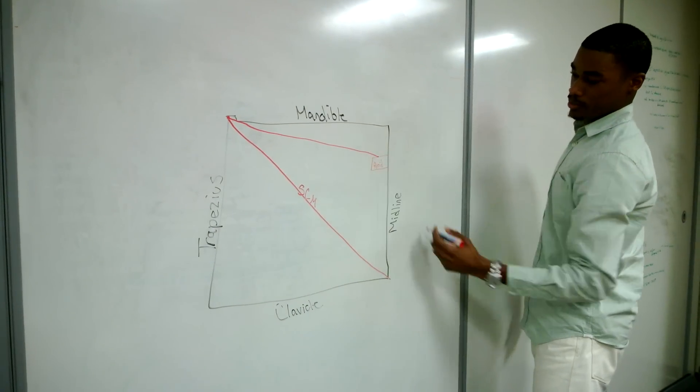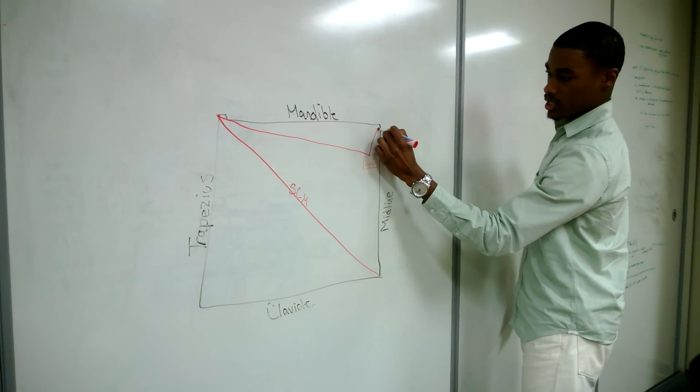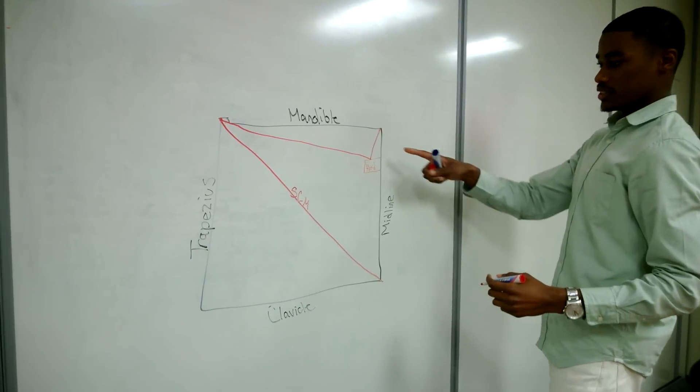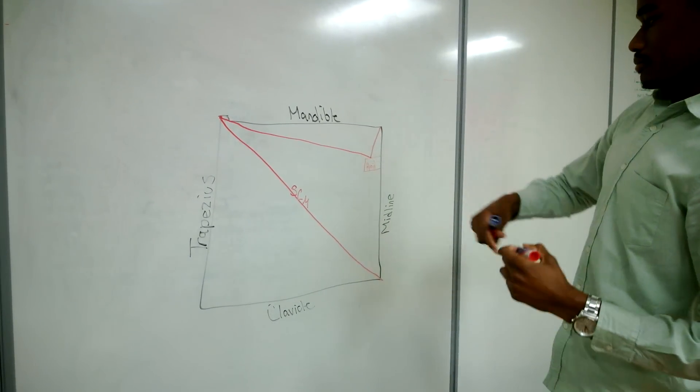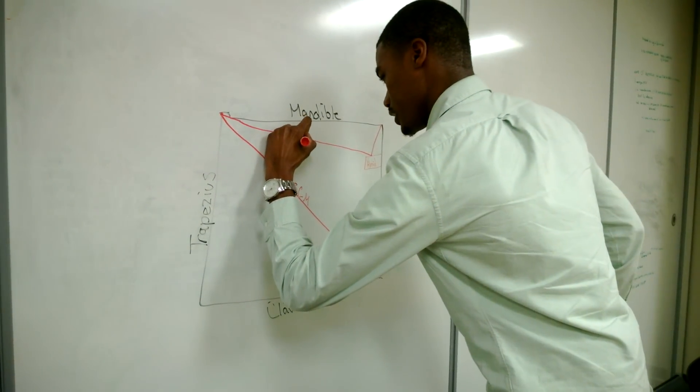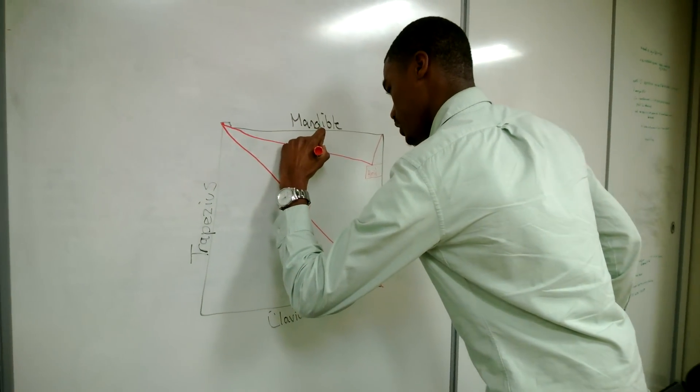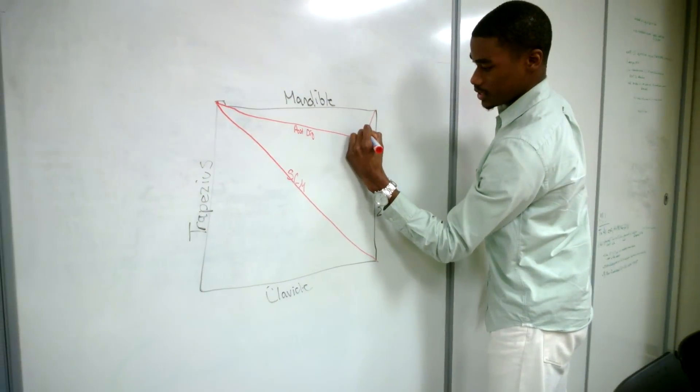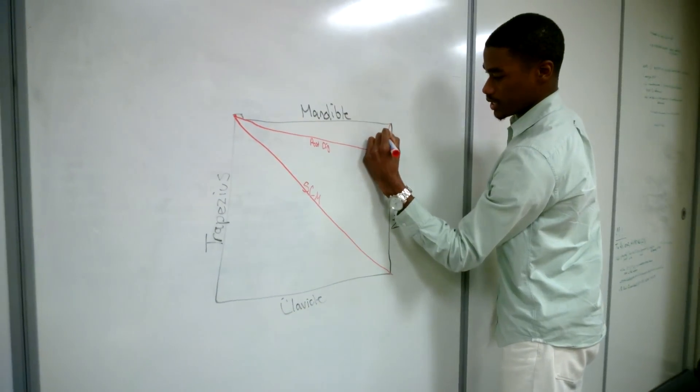Okay, see your hyoid bone. The anterior portion of it comes up to your mentum. So this is the posterior belly of your digastric. This is the anterior digastric.